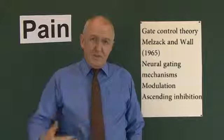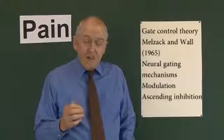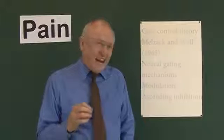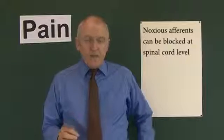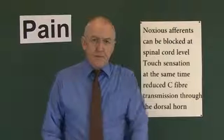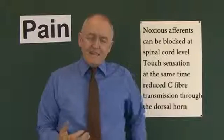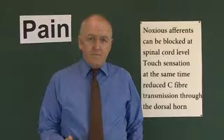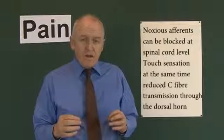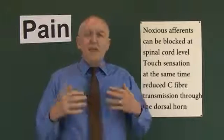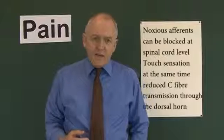It's an ascending inhibition — the inhibition happens as the nerve impulses go up. The idea is that noxious afferents can be blocked at the spinal cord level, and this is based on touch sensation. If you injure your elbow, what do you automatically do? You rub it. It's automatic to rub an injured area. We do this with our children — if they come in and say they've bashed something, it's natural to rub it for them.